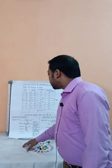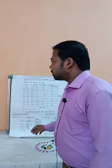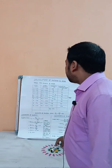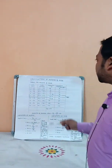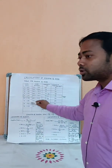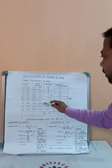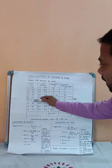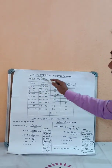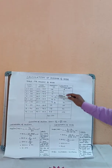First, we will discuss about median — how we will calculate median. The table for median has class limits and class boundaries, which will be converted to frequency.